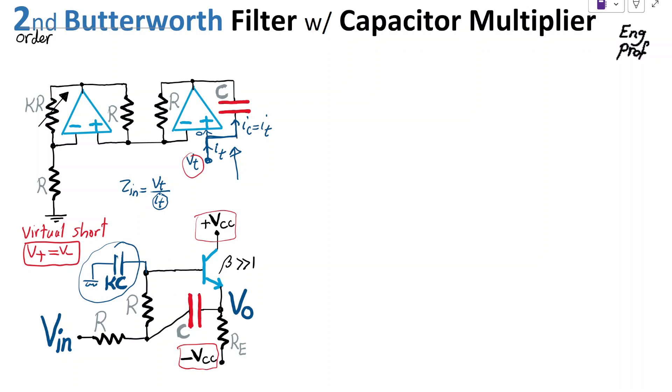We can assume that virtual short is valid for both op-amps. If we apply VT at the positive terminal, we should get VT at the negative terminal as well. That VT appears at the positive of op-amp number two, so you get VT at the negative terminal as well. That VT appears across the resistor, causing a current I equal to VT over R that flows through this resistor and continues through KR.